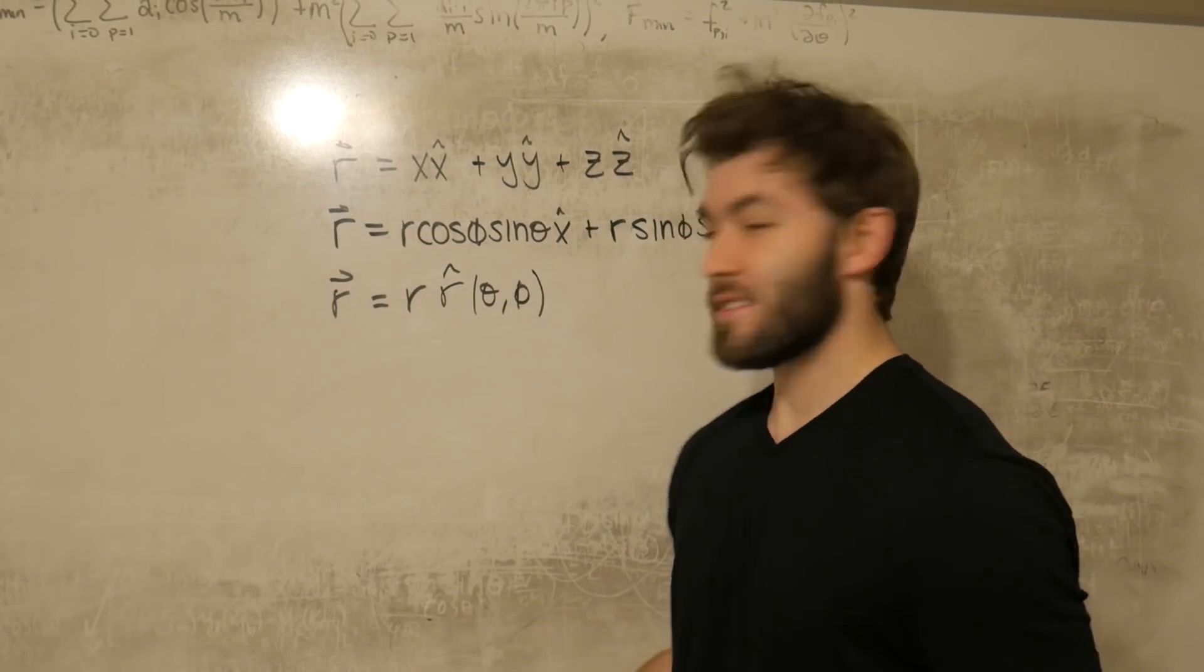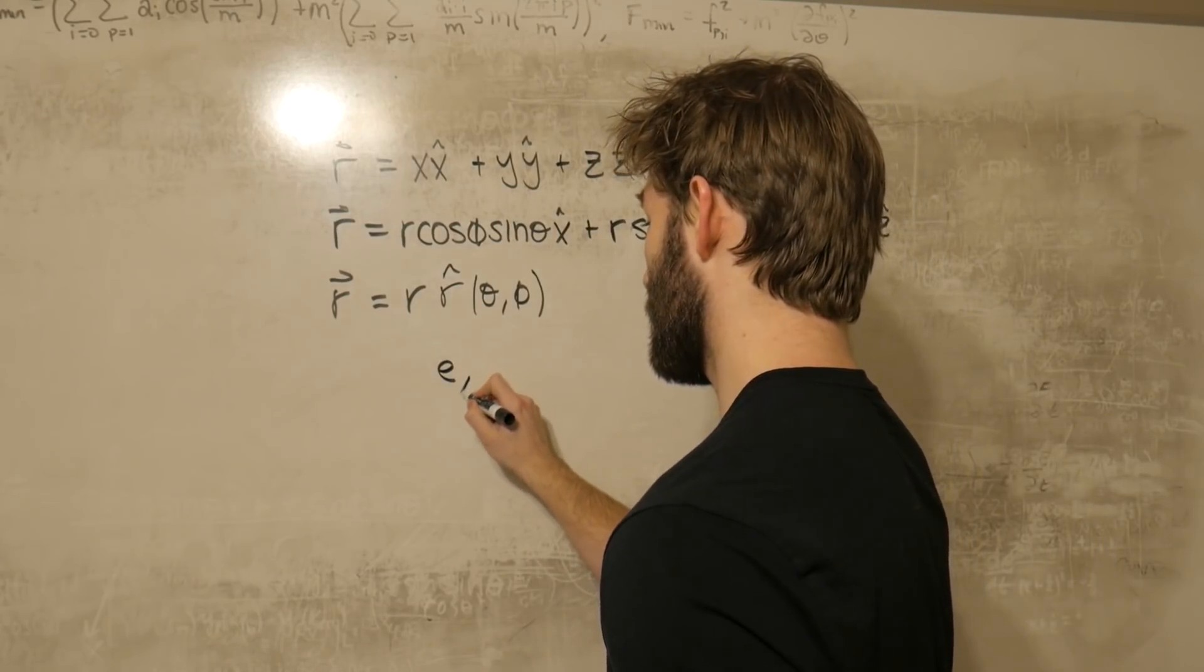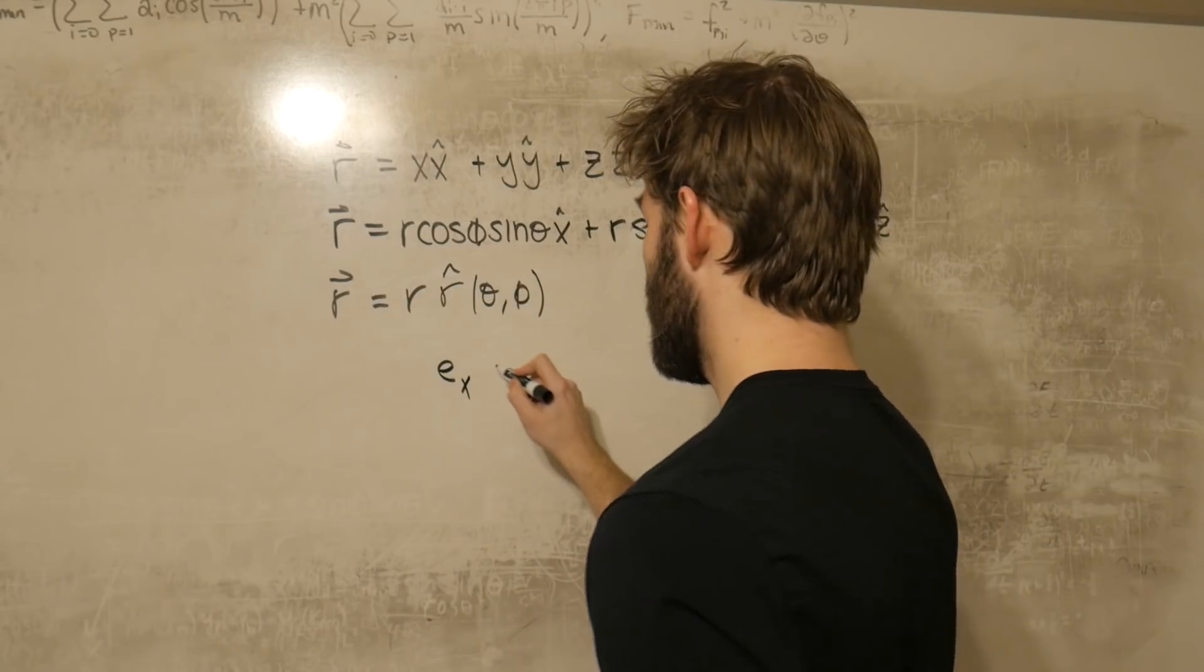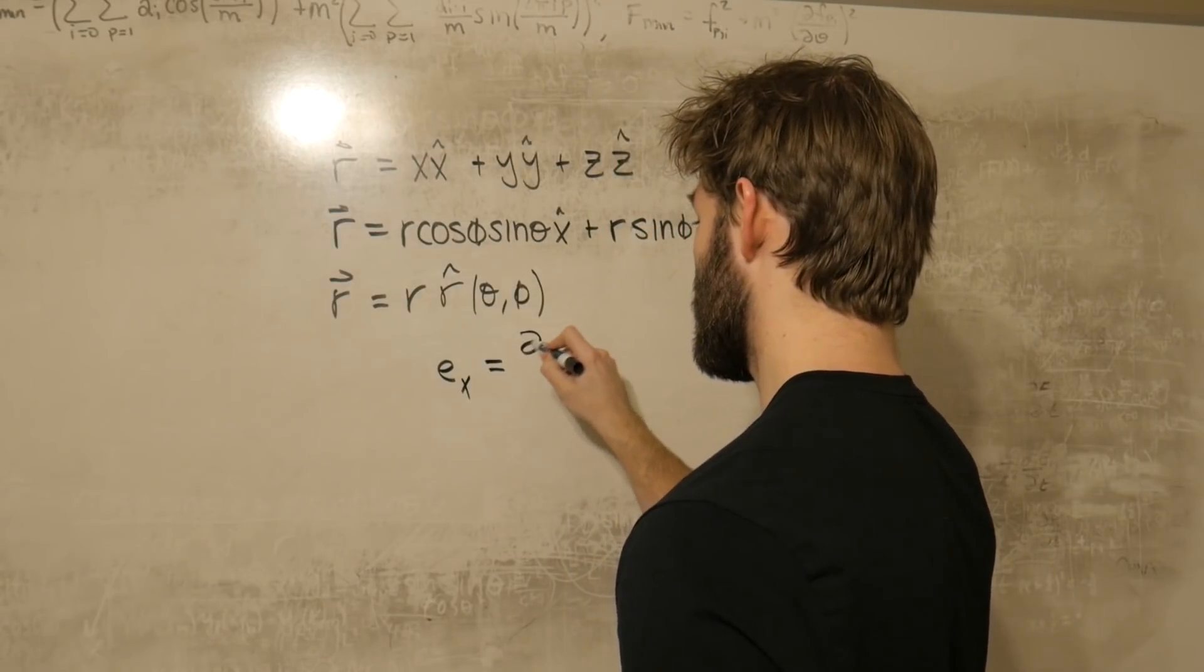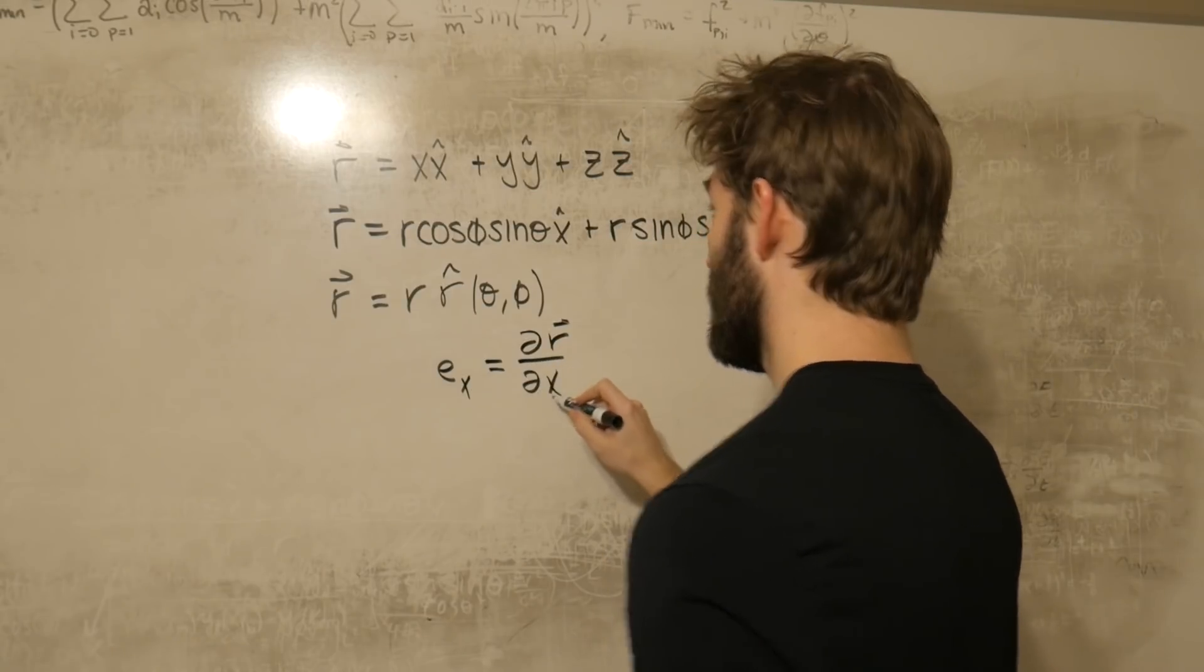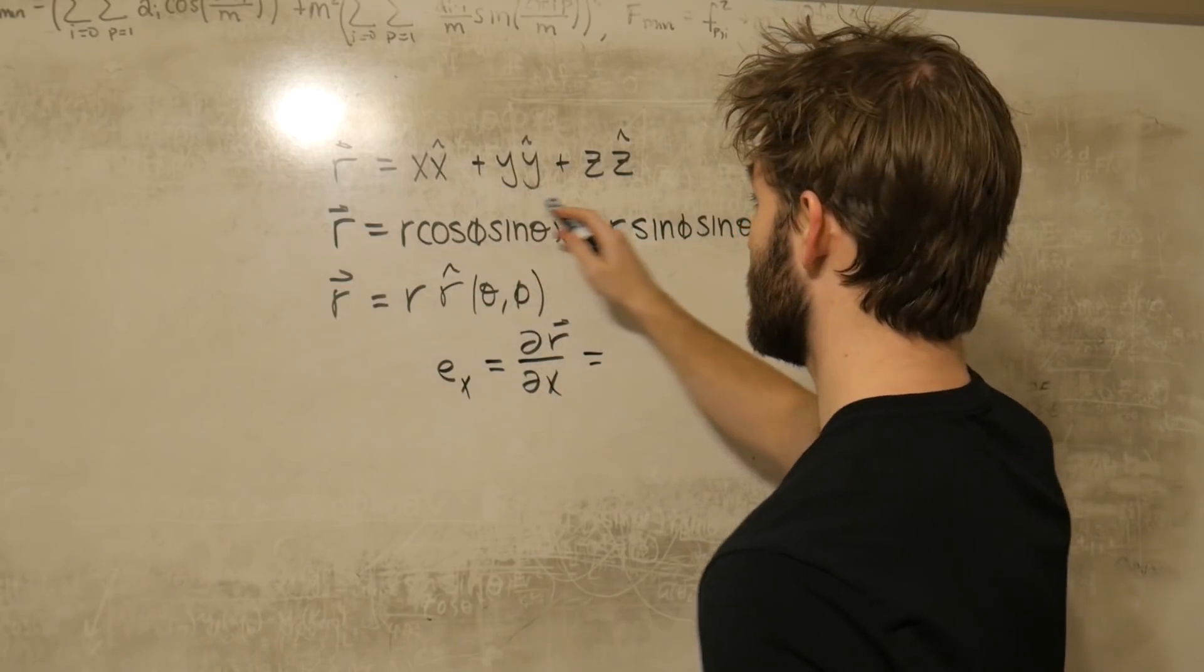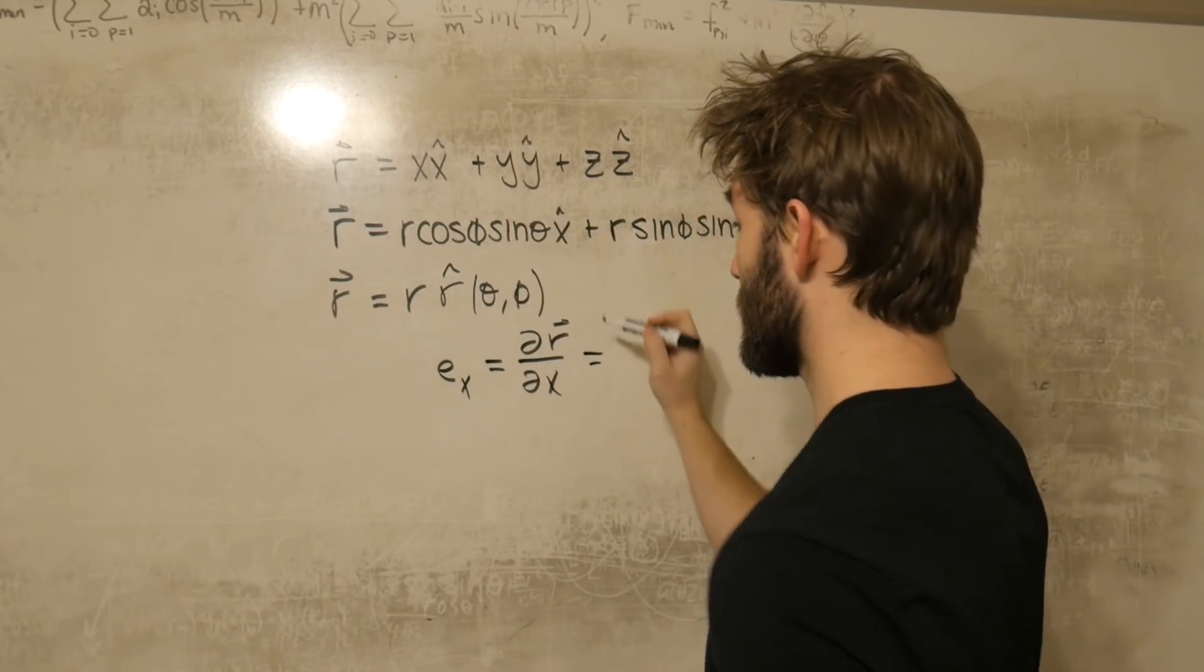Now to make this concept more tangible, let's do a simple example. Say we wanted to define a new basis vector, e sub x. Well based off of this, we would define this as a change in r with respect to x. And if we look at our position vector here, this corresponds to taking the derivative of this vector valued function with respect to x.